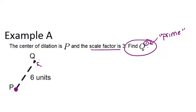So if the scale factor is 3, and this original length was 6, what we're going to do is multiply 6 times 3, and our new length will be 18 units long. So it has to be 3 times as big.